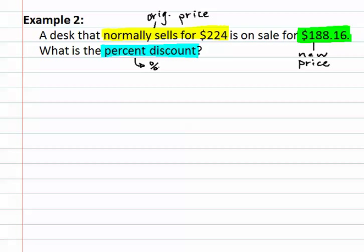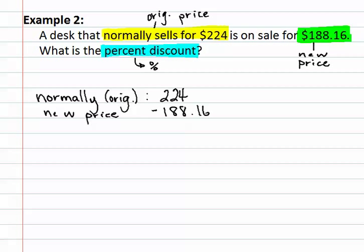We must first start by finding out how much we actually saved in the discount. To do this, we do somewhat of the opposite of the last step of the last example. So the normally sells is actually our original price. This original price was 224 dollars. If we subtract out what the new price was, or 188 dollars and sixteen cents, we can see how much we are actually saving. When we subtract, we see that we are saving 35 dollars and 84 cents. This is our amount of discount.